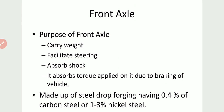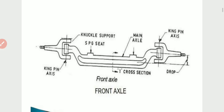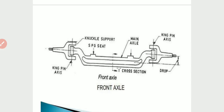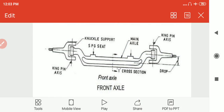The purpose of the front axle is to carry weight, facilitate steering, and absorb shock. It absorbs the torque applied on it due to braking of the vehicle. It is made up of steel drop forging having 0.4% carbon steel or 1–3% nickel steel. This is the diagram of the front axle. The middle part is the main axle having a high cross section. It is joined by a kingpin to the remaining part of the axle. This part connected via kingpin is called the stub axle.